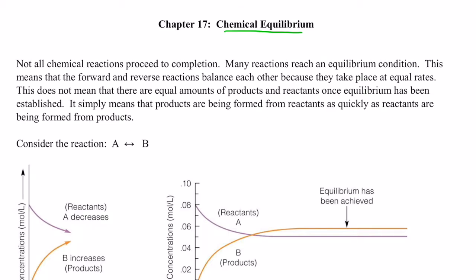Many of you might think that all chemical reactions reach what we call completion. For instance, if I had a bucket of gasoline in the front of my room — full of gasoline — and I throw a match in there, that bucket of gasoline will start to burn and continue to burn so long as there is gasoline and oxygen to combust those gasoline molecules. That will continue until I run out of gasoline or oxygen. We say those types of reactions go to completion.